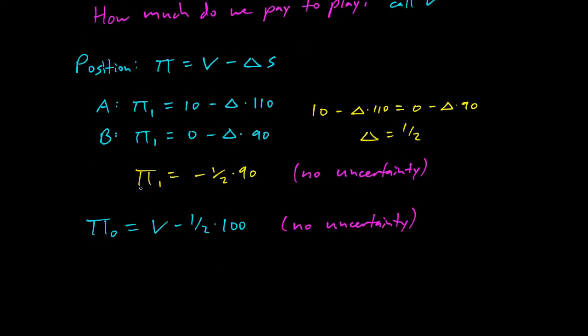And when we have the position has no uncertainty at two different time steps, the no arbitrage principle implies that these have to be equal. So it implies that pi_0 equals pi_1.